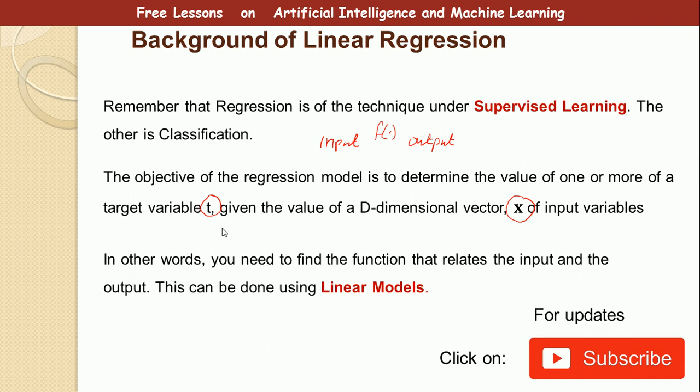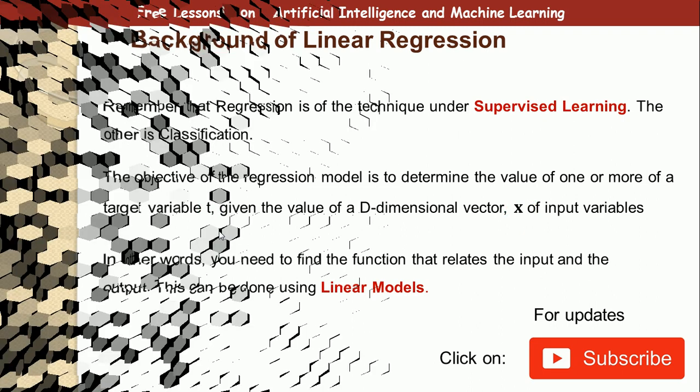So in regression, you are given data, a training data made up of vector inputs, a set of variables, and also outputs. That is called the training data set. So you need to examine this input and derive the function that holds this input and output together, so that when you are given a new input, you will be able to find the output.